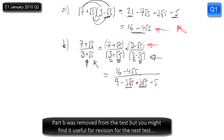So we're left with the numerator unchanged — 16 minus 4 root 5 — and all we have in the denominator is 9 take away 5, which is 4. Now we wanted it in the form a plus b root 5. Both terms in the numerator are divisible by 4, so we can split it up: 16 divided by 4 is 4, and minus 4 root 5 divided by 4 is simply minus root 5. And there we have our answer.